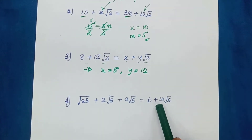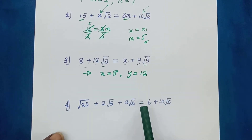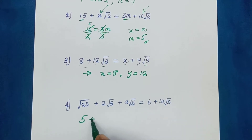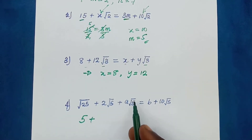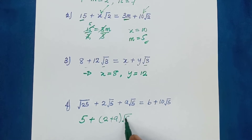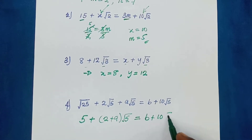Let's look at another example. That side is already simplified, but there is a bit of work to be done on this side — we need to simplify further and then group. Root 25 is the same as 5, since 25 is a perfect square. So the left side becomes 5 plus 2 root 5 plus a root 5, which we can rewrite as 5 plus 2 plus a, all times root 5. And this is equal to b plus 10 root 5.